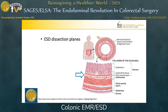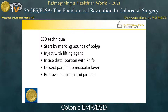When performing ESD, many practitioners start by marking the bounds of the polyp to facilitate boundary identification once the dissection is underway. This is done with small cautery marks along the edge. Then, a lifting agent is injected to separate the bowel wall layers. It is not uncommon to have to re-inject throughout the procedure to maintain that spacing.